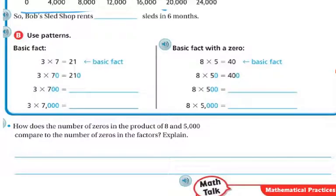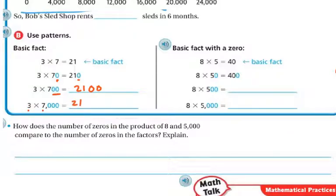The next one: the basic fact is 3 times 7, and 3 times 7 is 21. For 3 times 70, I'm adding a 0 so it's 210. Look at this one — 3 times 700: I have 21 because 3 times 7 is 21, and then the answer should have two 0s. And 3 times 7,000 — my answer should have three 0s: 1, 2, 3.